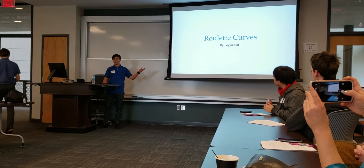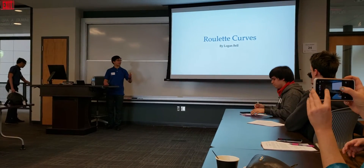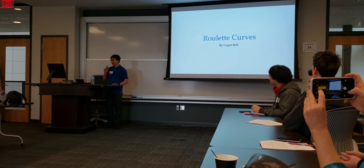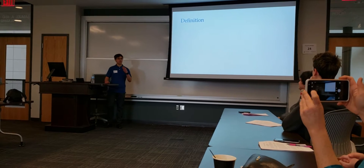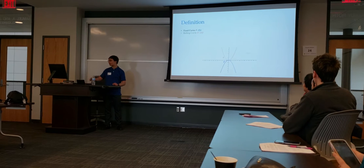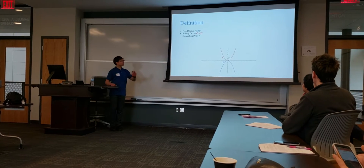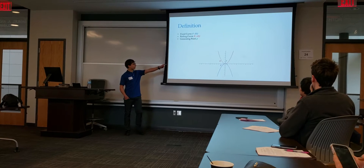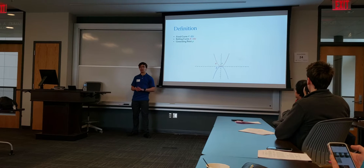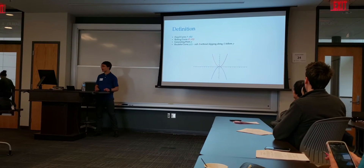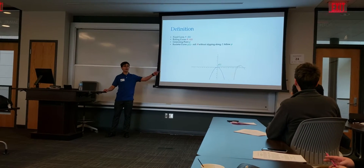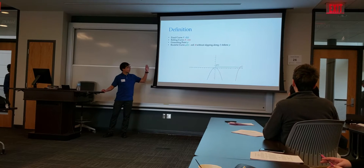Roulette curves are not going to help you gamble, so you can't go to the casino after this and win a bunch of money. But we can define roulette curves formally given three objects: we have a fixed curve F, a rolling curve R, and a generating point P. What we do is we roll the rolling curve along F without slipping, and we follow the path that the generating point takes. The path that it traces is called the roulette curve. In the example shown, that's a parabola rolling along a parabola, and the generating point traces out a line.